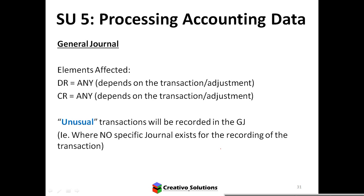Can any transaction be recorded in the general journal? Yes, because it just has a debit and a credit. However, we try to group other transactions into separate journals because it makes accounting easier. For unusual transactions — things that are not cash, not creditors, and not debtors — the general journal is used.